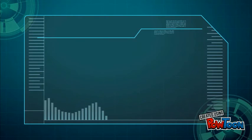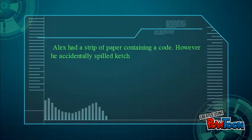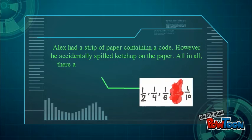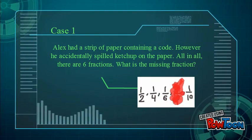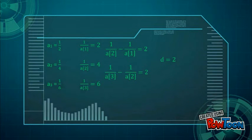Alex had a strip of paper containing a code, but accidentally spilled ketchup on it. There are six fractions total. What is the missing fraction? Given a₁ = 1/2, a₂ = 1/4, a₃ = 1/6. Reciprocating, we get 2, 4, and 6.